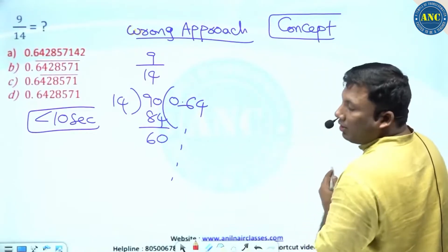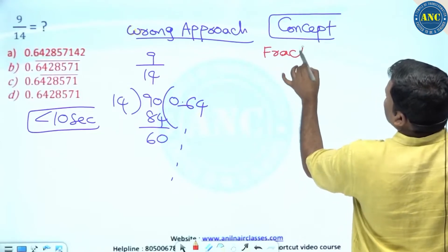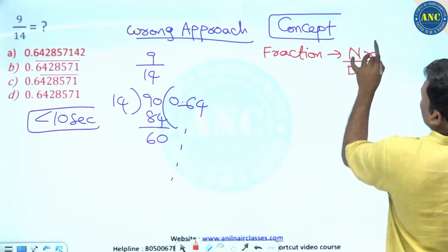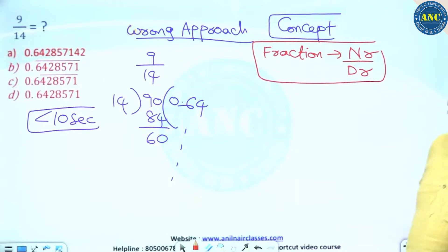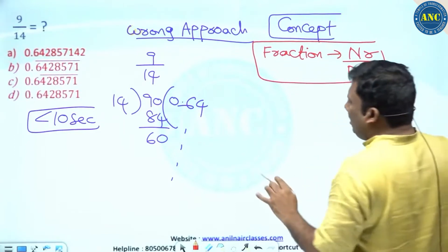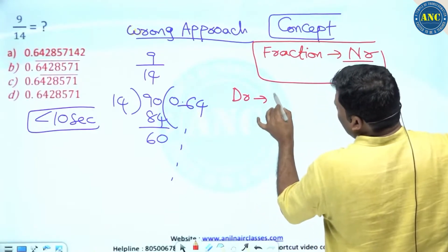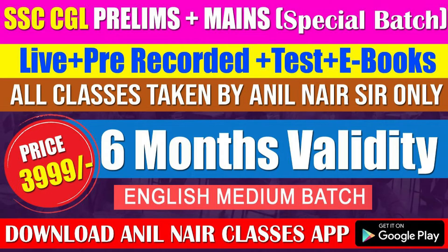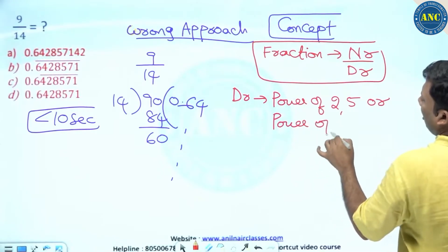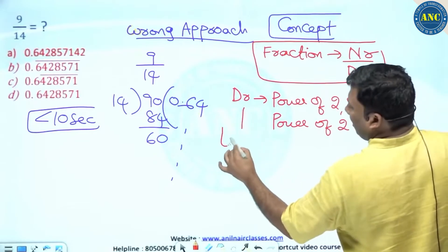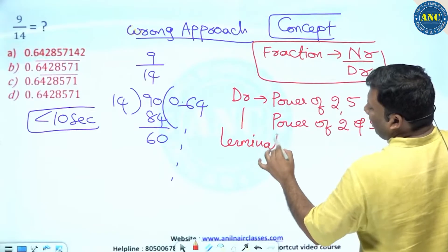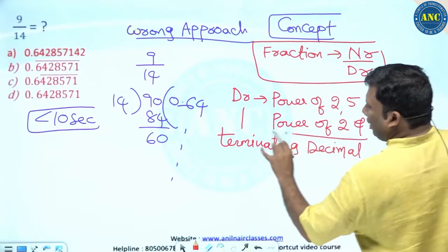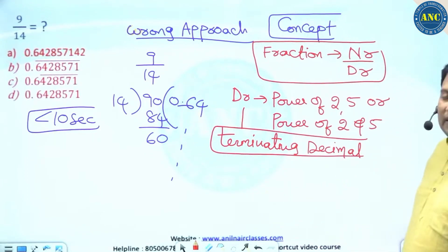Please write this down — every slide is important. A fraction is of the form numerator by denominator. DR represents the denominator. If the denominator is a power of 2, or a power of 5, or a combination of powers of 2 and 5, you will get a terminating decimal. A terminating decimal means something like 0.32 or 0.18.